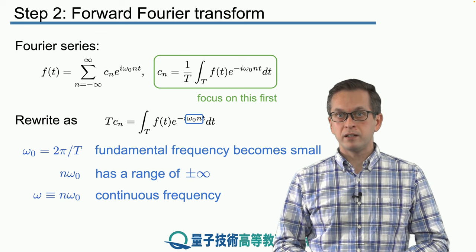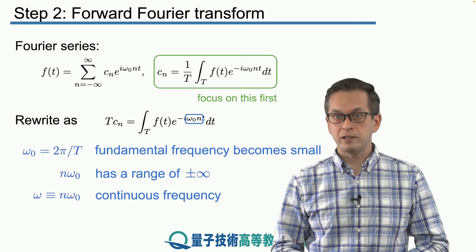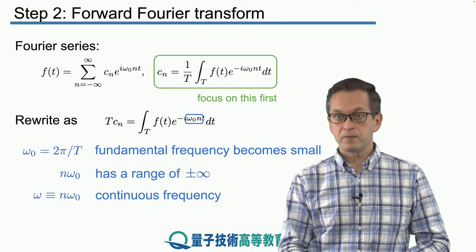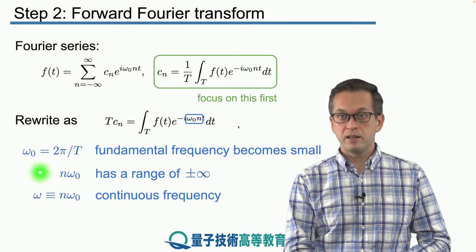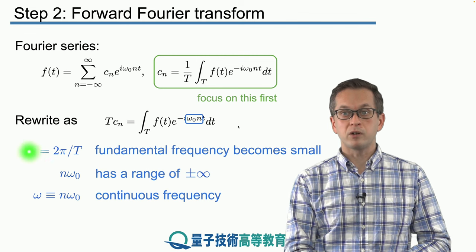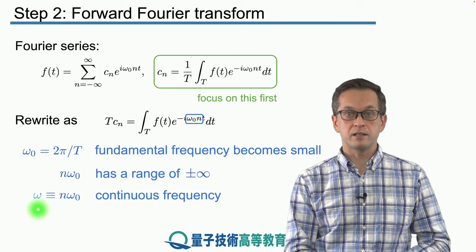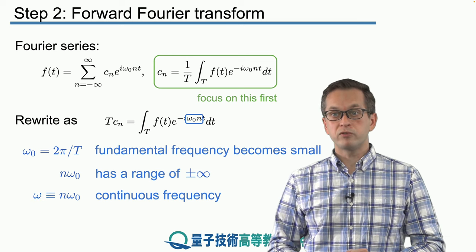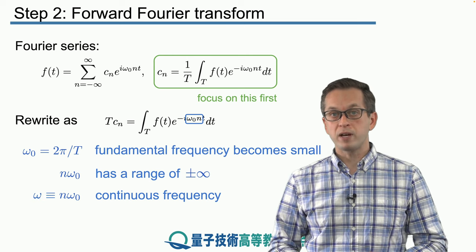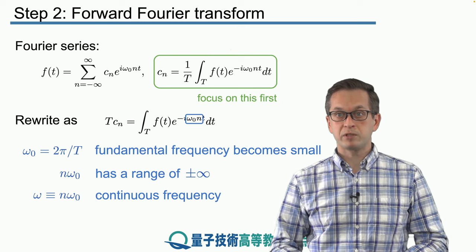But as we take that limit of capital T going to infinity, this product, n times omega naught, will become a continuous number, a real number. So we're just going to rewrite it as this. We are going to define a new frequency, a continuous frequency, omega, as the product of n times omega naught.